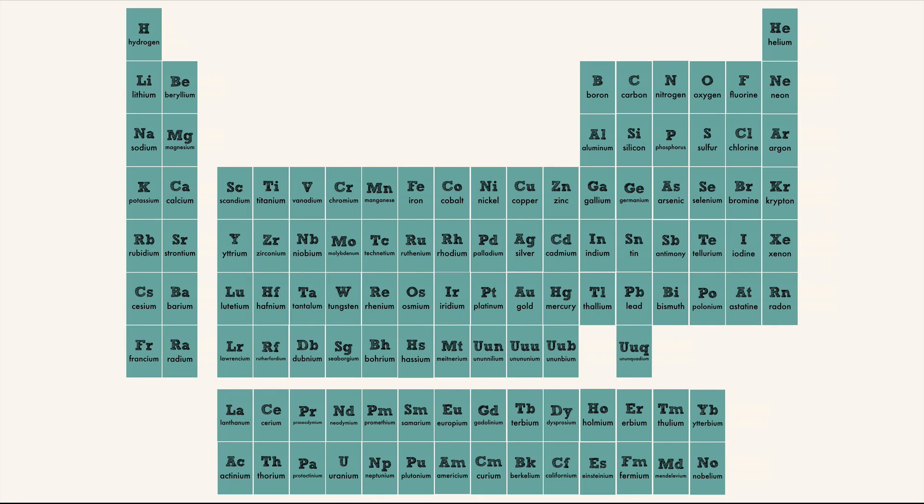For all of the elements that exist, scientists have named and given them symbols. These symbols provide a shorthand way to write chemical formulas.